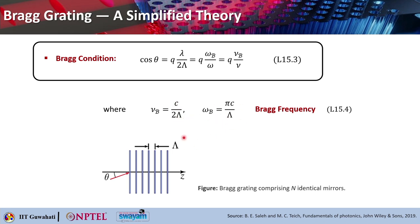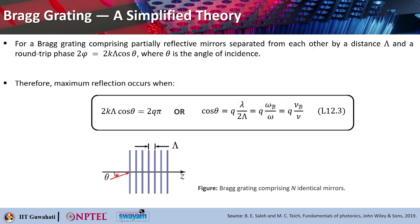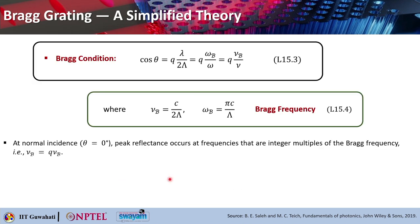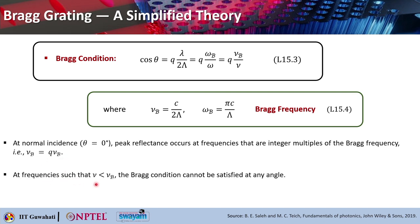The Bragg linear frequency nu_B is basically c over 2·capital lambda, and the Bragg angular frequency omega_B will be pi·c over lambda. For normal incidence, the peak reflectance occurs at frequencies which are integral multiples of the Bragg frequency: nu equals q·nu_B. At frequencies below the Bragg frequency, the Bragg condition cannot be satisfied at any angle. When frequency lies between nu_B and 2·nu_B, the Bragg condition can be satisfied at one angle: theta equals cos⁻¹(lambda over 2·capital lambda), which simplifies to cos⁻¹(nu_B over nu).